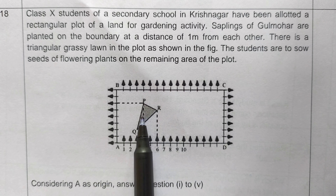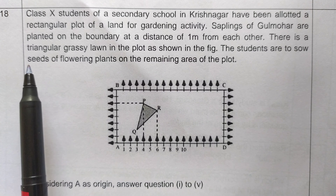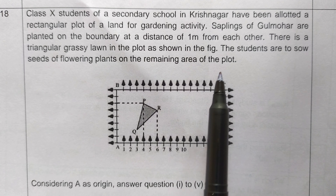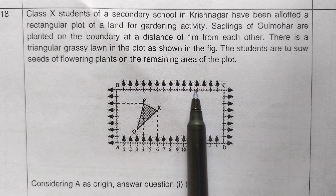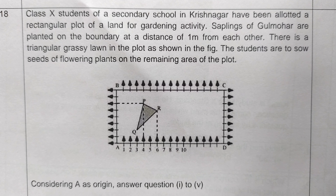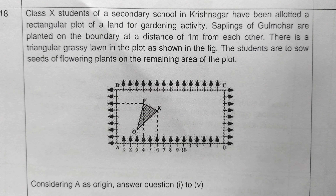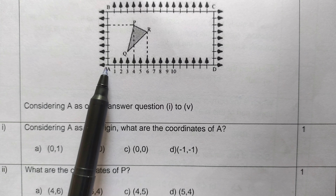Grass is grown in the triangular area PQR. The students are to sow seeds of flowering plants on the remaining area of the plot. Considering A as origin, we need to answer the following questions.